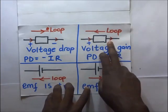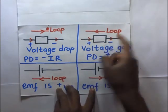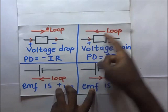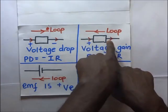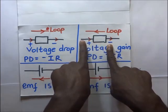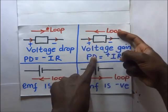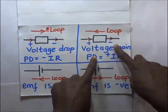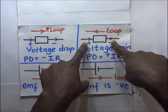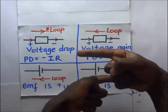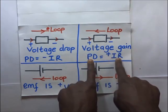Coming to the next case: this loop is moving in the opposite direction to the flow of current. Because the loop is moving in the opposite direction, with respect to this loop we see that it is moving from a position of lower potential to a position of higher potential regarding the flow of current through this resistor. So as far as this loop direction is concerned, there is a voltage gain as we move in this direction, and so that will be a positive IR.